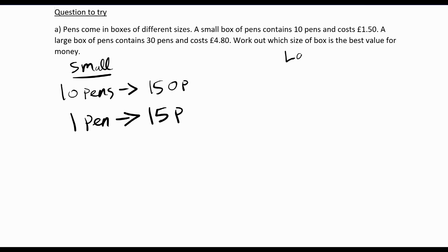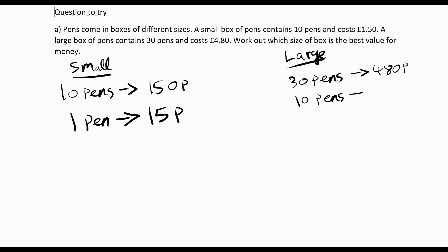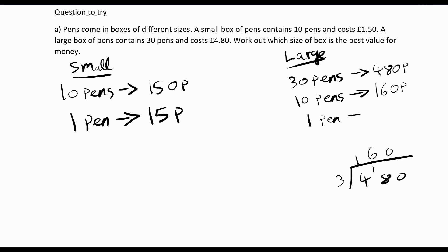For the large box, we have 30 pens for 480p. To work out how much 10 pens cost, we divide by 3: 480p divided by 3 is 160p, which means 1 pen is 16p. So the large box is actually more expensive because every pen is 16p. Counterintuitively, the best option is the small box.